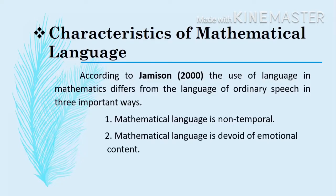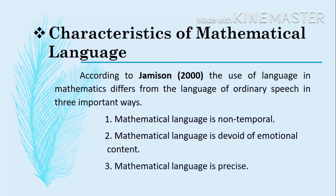Meaning to say, we have no emotional attachment towards mathematical language. And lastly, mathematical language is precise — it's exact. When we say 1 plus 1, there is no other answer than 2. So that is just an example of how precise mathematical language is. There's only a certain answer to a certain problem.